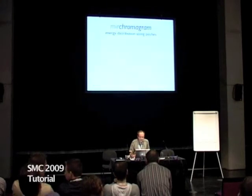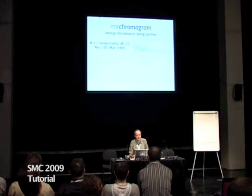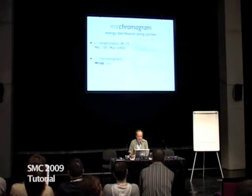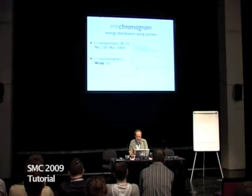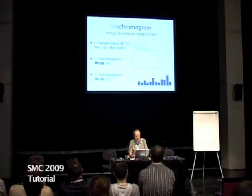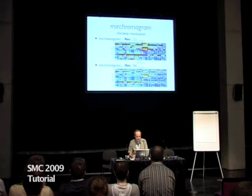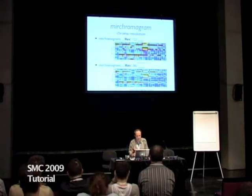Then tonality. You can compute the chromogram — the distribution of energy along the different pitches. First, you compute the spectrum in decibels, take the 20 highest decibels over a range of frequencies, then redistribute this spectrum along pitches. You can wrap it to have the distribution along the different pitch classes — 12 pitch classes — and see the distribution of energy. You can also specify the resolution: 12 by default, or other resolutions such as 36, giving three classes for each traditional semitone.